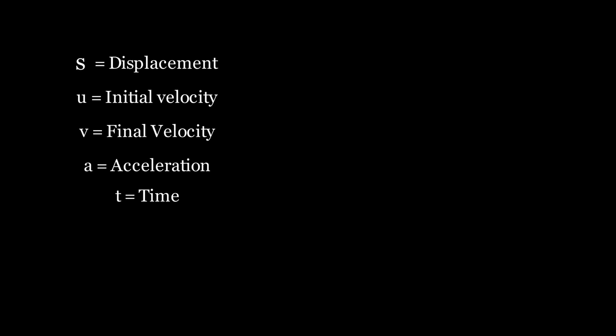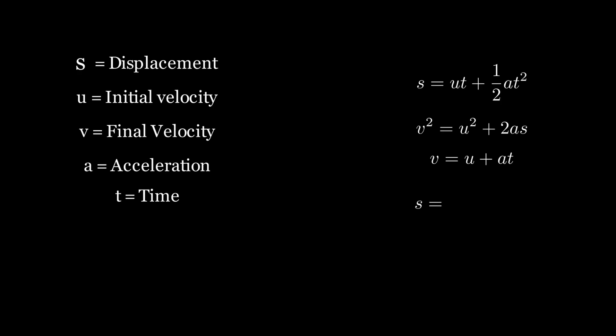These variables are the basis for the four linear motion equations: S = U·T + ½A·T², V² = U² + 2AS, V = U + AT, and S = T × (U + V) / 2.